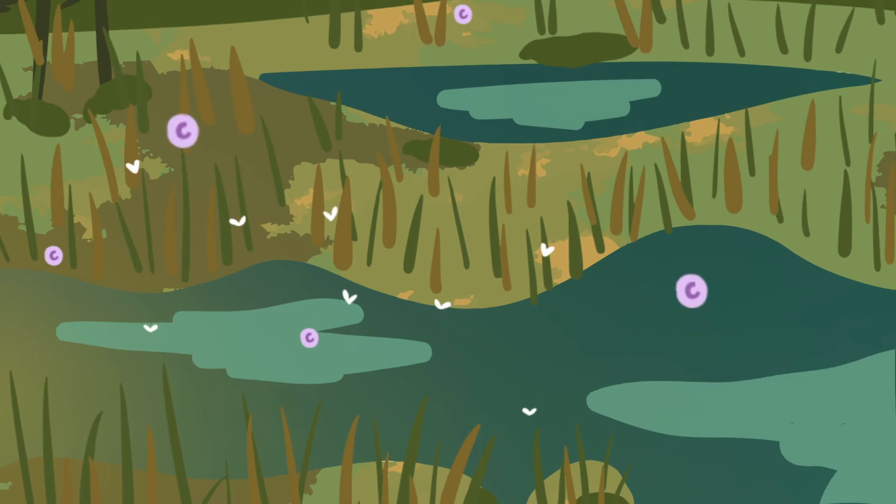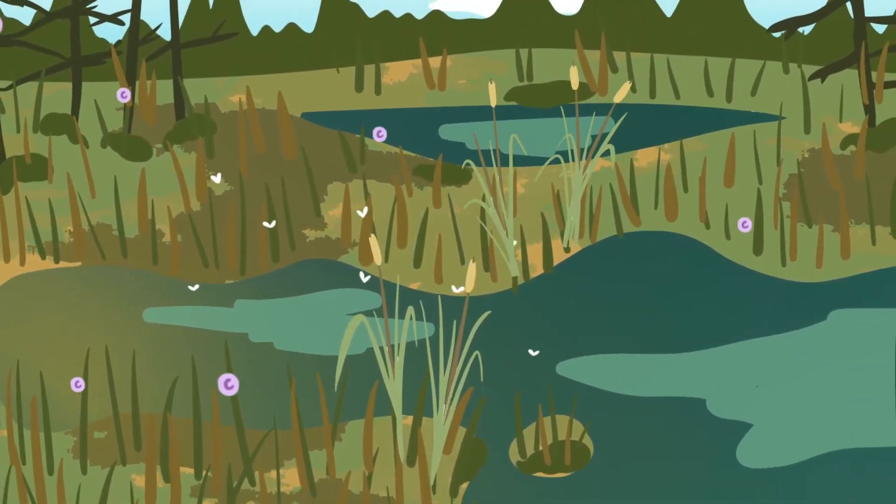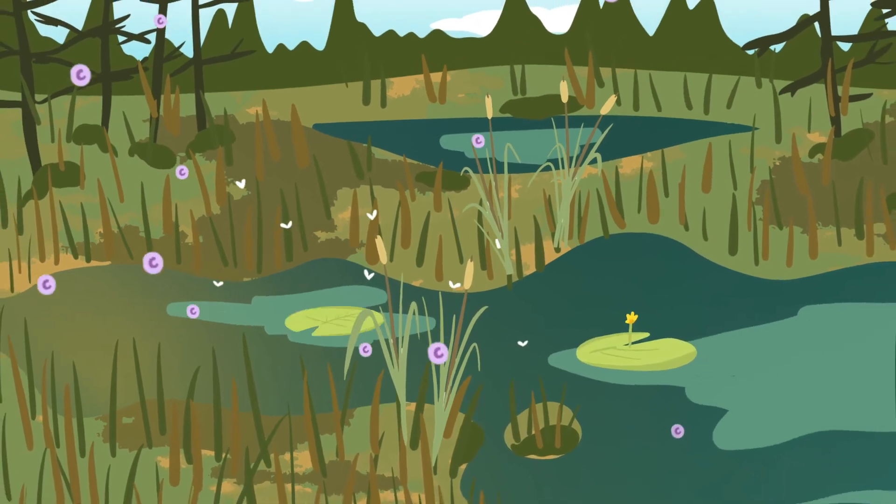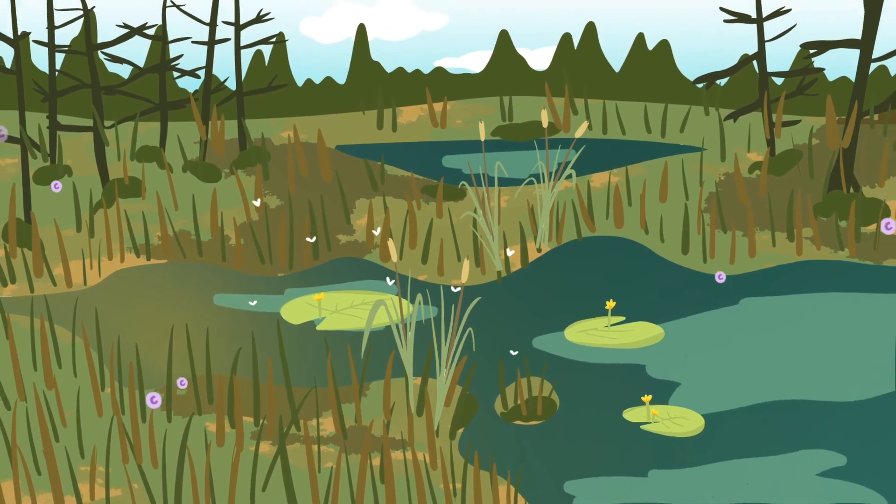Scientists and conservationists are working to protect natural spaces and restore wetlands. And foresters are replanting trees to replace the ones we have cut down. So what else can we do to help?